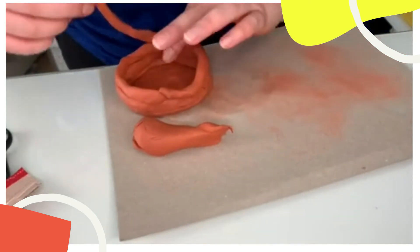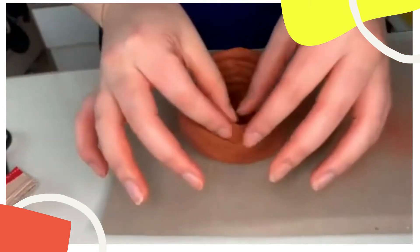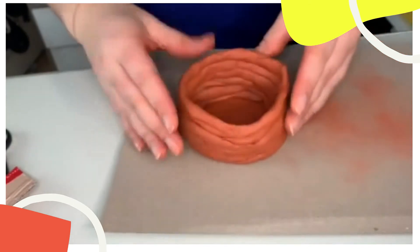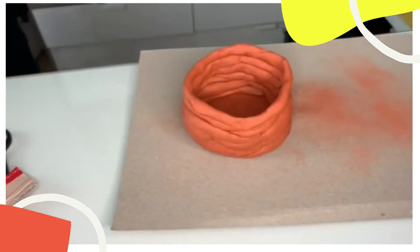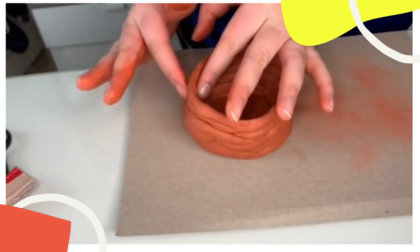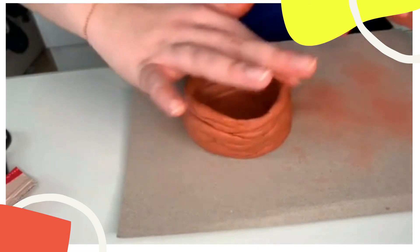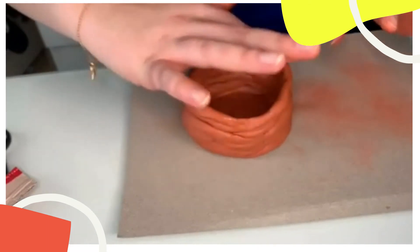Once I finished building my walls in my pot, I decided to go in with a little bit of water just to make it smoother on the outside. If you want, go grab some water, put some on the fingertips, and then rub over any of the little cracks in the pot. This just makes it smoother and a bit nicer.